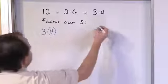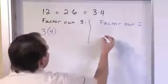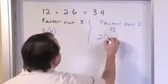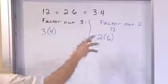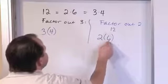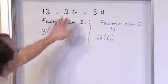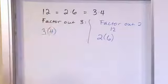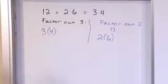If instead I tell you to factor out a 2 from 12, you pull the 2 out and what's left has to be 6, because 2 times 6 is 12. The 2 and the 6 are called factors of 12. The 3 and the 4 are also factors of 12. When you pull out a 3, you have to have a 4 left over so that your multiplication still gives you 12.